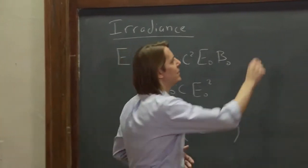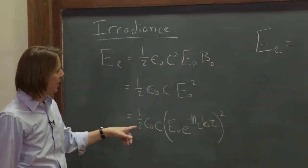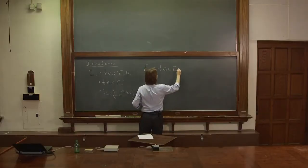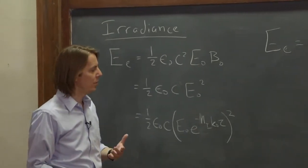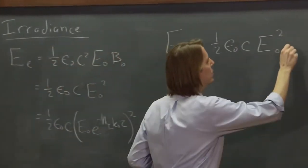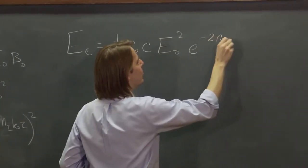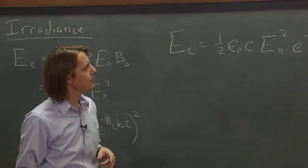So E_c, then, the irradiance for the plane wave, is one-half epsilon-naught c, E-naught-squared, the amplitude of the electric field when we started, squared, times e to the minus 2 n_i, imaginary part of the refractive index, and the vacuum wave length, k-naught.